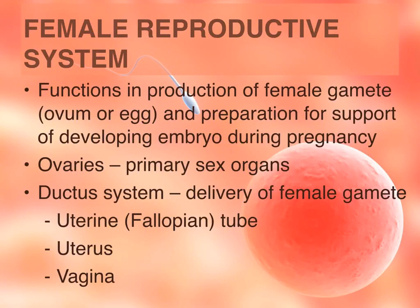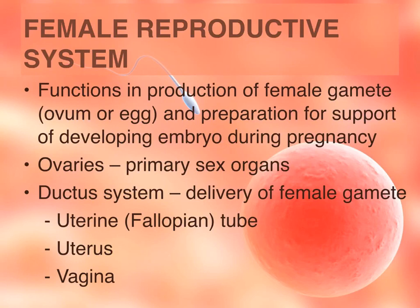The function of the female reproductive system is to produce the female gamete, just like one of the functions of the male reproductive system is to make the male gamete. The name of the female gamete is ovum (singular) or ova (plural), which are the egg cells. Additionally, the female not only has to produce the gamete, but also has to prepare the reproductive organs to support the embryo once pregnancy occurs, and then nurture the baby even after birth.